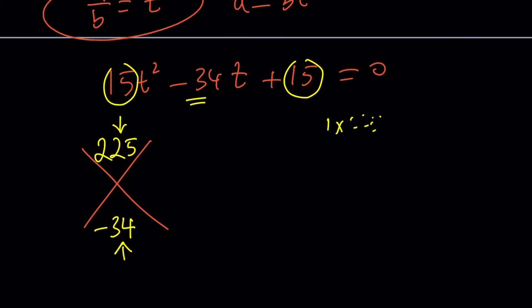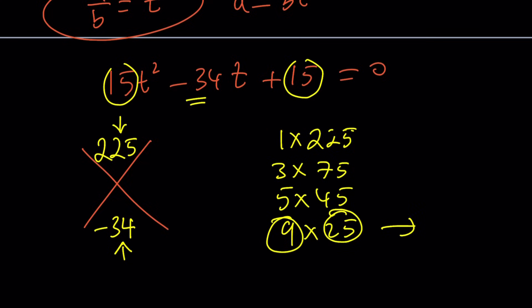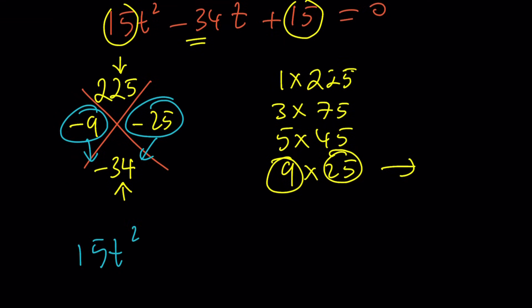1 times 225. And then 2 doesn't go. 3 goes. And that will be 3 times 75. And then 4 doesn't go. 5 goes. 5 times 45. And then 6 doesn't go. 7 doesn't go. 8 doesn't go. 9 goes. And I think that should be 9 times 25. And yes, this is the one that gives us 34. Have you noticed? If you add them up. But we want negative 34. So we're going to use negative 9 and negative 25 as our two numbers because their sum needs to be negative.